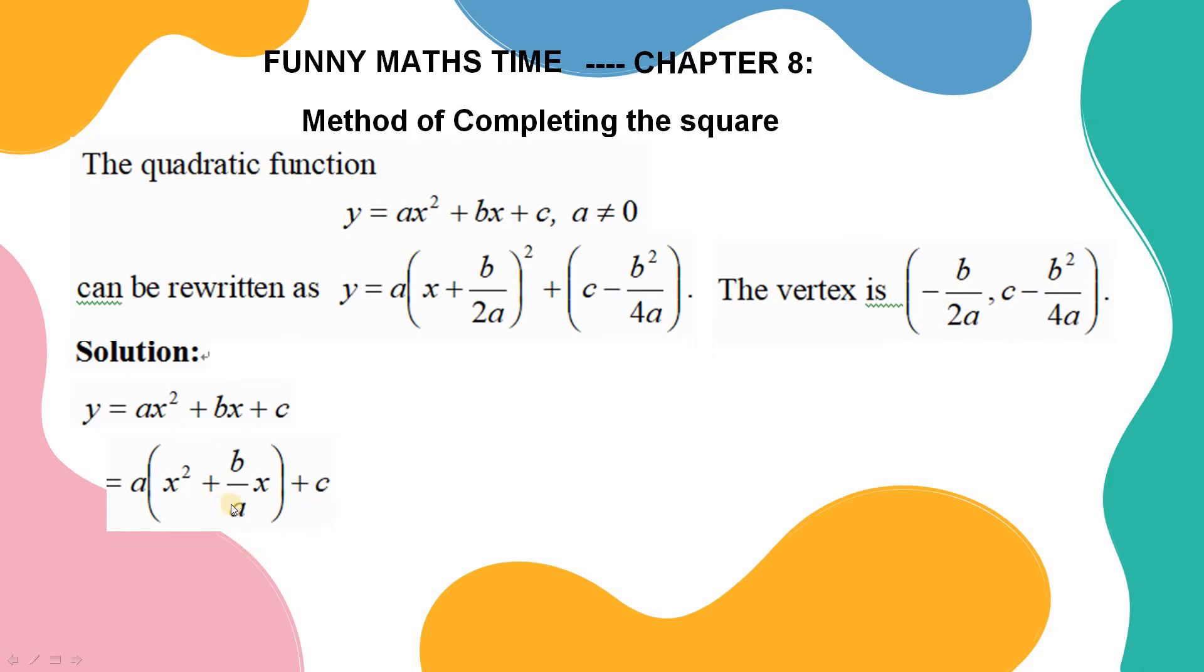The next step is the crucial step. We have to insert one more term so that it can be a perfect square. This term should be a perfect square. This term is equal to b over 2a. It means b over 2a all square.